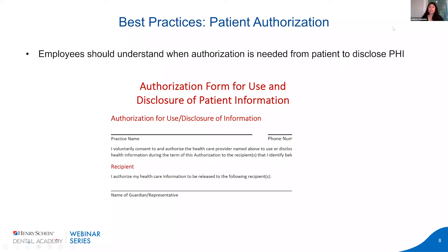Patient authorization is very important when we need to share or disclose information about a patient. There are certain cases when we don't need a patient's permission — like when we're treating the patient or trying to get payment from an insurance company. But if a patient wants their chart sent to another office you've never heard of, you need permission from the patient. Similarly, if a patient family member asks for patient information, you need to make sure you have permission. Employees need to understand when patient authorization is needed and how to properly obtain it.